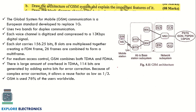The next question asks you to draw the architecture of the GSM system and explain its important features. The GSM architecture includes the mobile station (mobile equipment plus SIM card), the base transceiver system, and the base station controller — together called the base station subsystem. Be careful to distinguish between mobile station and mobile equipment in your explanation. This is similar to the mobile communication diagram seen earlier, with some modifications.